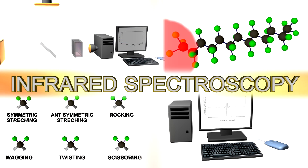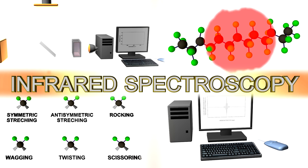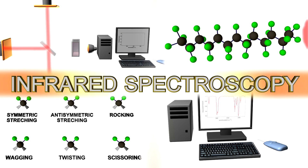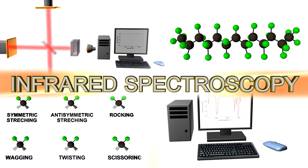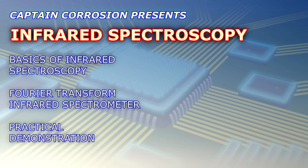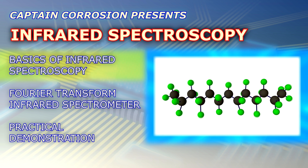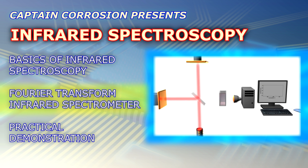Infrared spectroscopy is a powerful technique that allows us to obtain information about the chemical structure of a variety of substances by utilizing infrared electromagnetic radiation. You are watching a Captain Corrosion science video about infrared spectroscopy, where you will learn the basics of this technique, and how a Fourier transform infrared spectrometer works.